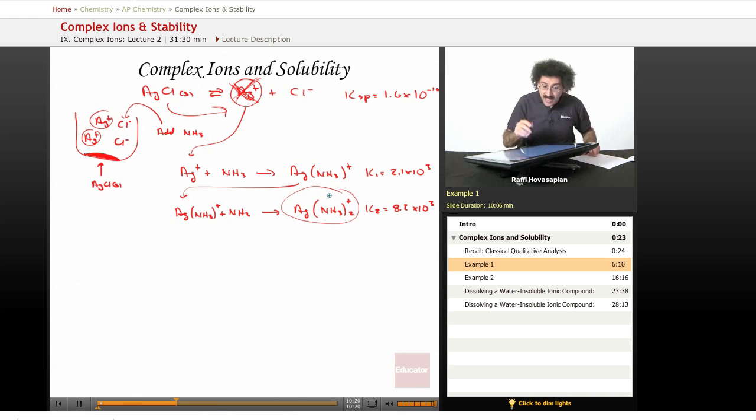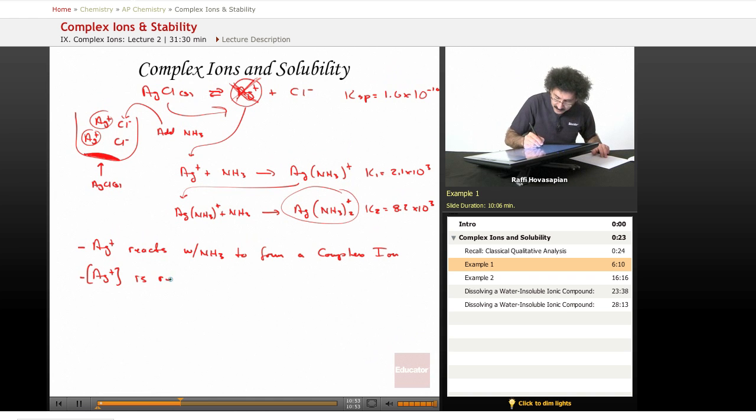Okay. So let's actually write these reactions in order. Let me write down what's going on here. It's very important. So Ag+ reacts with NH3 to form a complex ion. And as we know, ions in solution are soluble. Complex ion. The Ag+ concentration is reduced. It'd be good if I could spell. Is reduced.